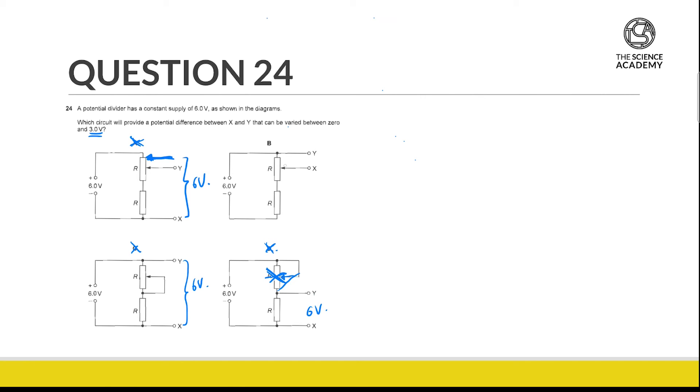Now what about B? If the junction of X is at this position, we can see very clearly that we are reading 3 volts, or rather, 3 volts is distributed to both resistors of capital R.